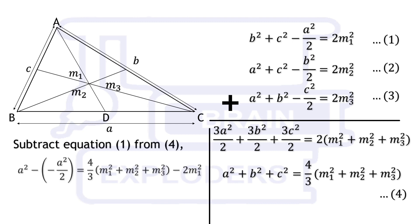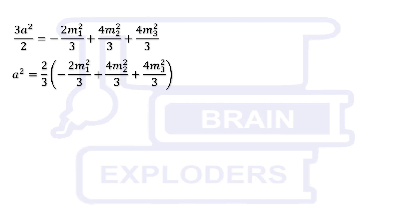We have 3A squared over 2 equals to minus 2M1 squared over 3 plus 4M2 squared over 3 plus 4M3 squared over 3. By rearranging the terms, we can write A squared equals to 2 third of minus M1 squared plus 2M2 squared plus 2M3 squared.